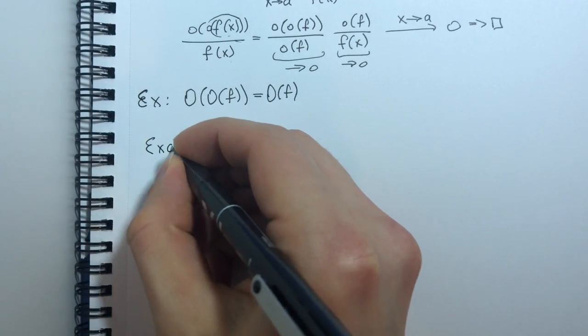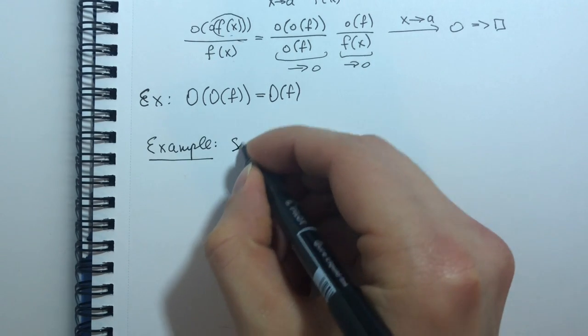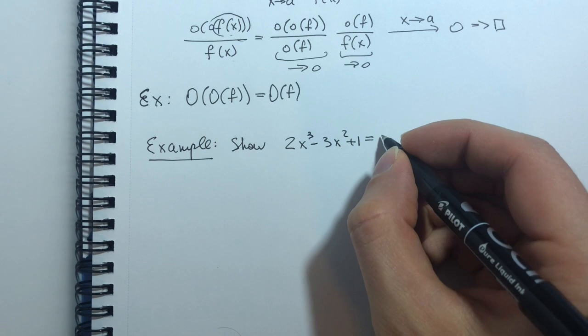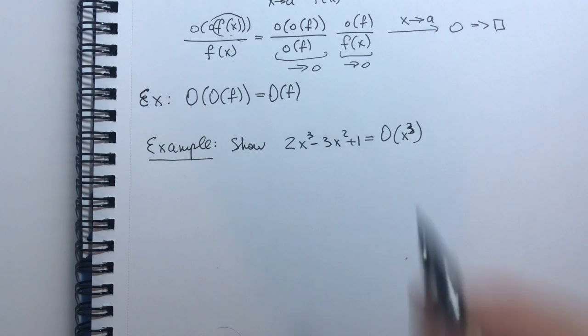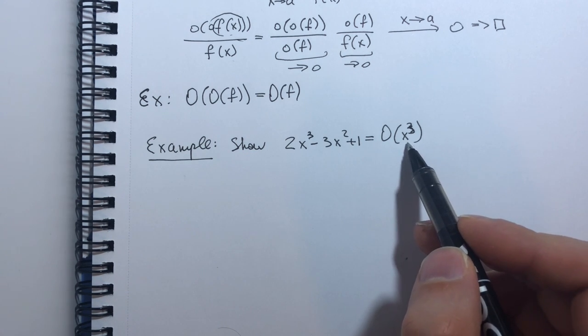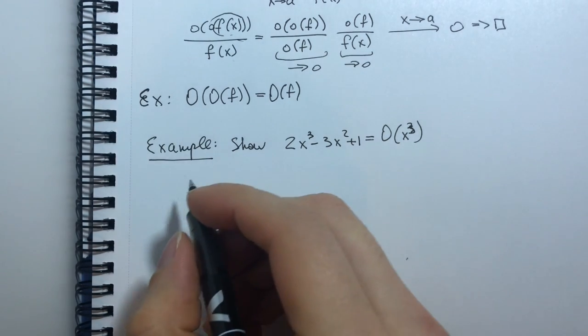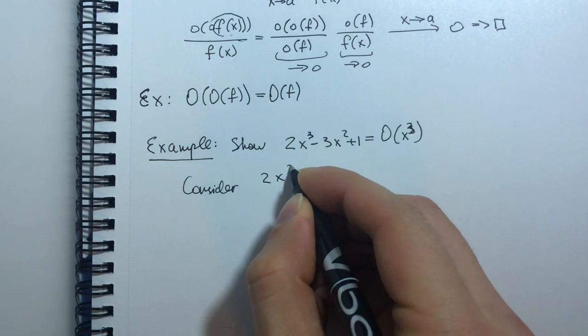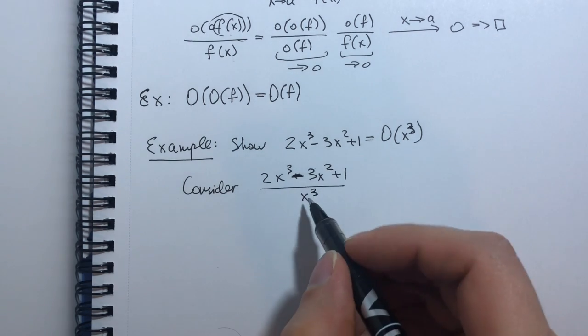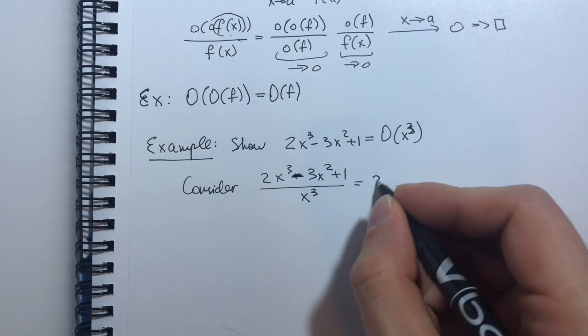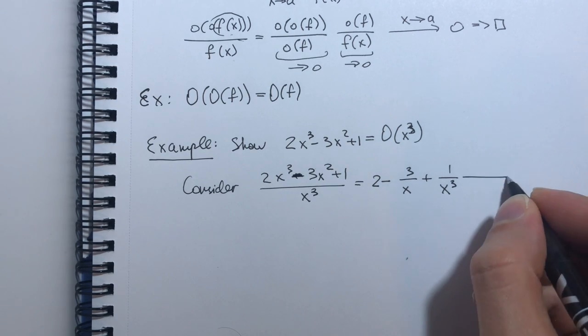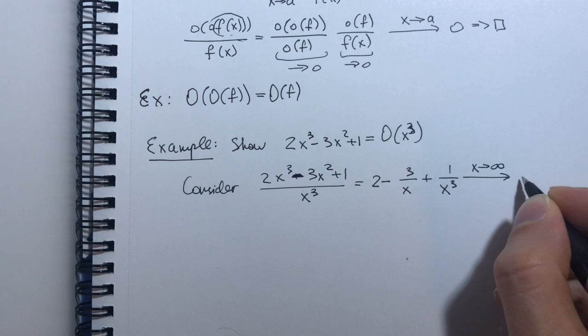Let us now have concrete examples. I want to show that this polynomial function 2x³ - 3x² + 1 is actually a function of big O of x cubed. So once again, by definition that means that beginning some x this polynomial will be bounded above by x cubed times some constant. Well consider this fraction, I just take my polynomial divided by x cubed and then I just divide every term by x cubed so I get 2 - 3/x + 1/x³. Right? It's very easy to show that as x tends to infinity all this tends to 2,